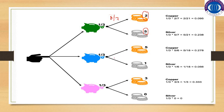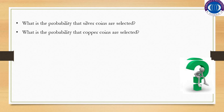Similarly, the probability of selection of a silver coin from the green piggy bank is 5/7. The probability of selecting a copper coin from the blue piggy bank is 5/6, as there are 5 copper coins and the total number of coins is 5 plus 1, which equals 6. I am leaving this example with two questions: what is the probability that a silver coin is selected, and what is the probability that a copper coin is selected?